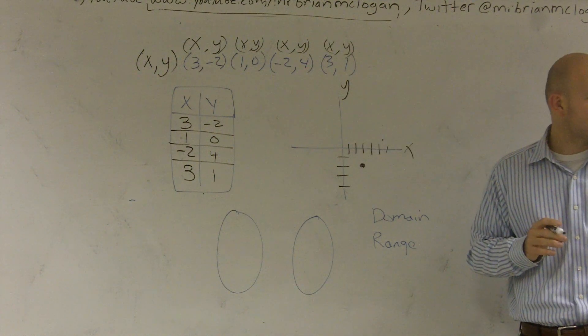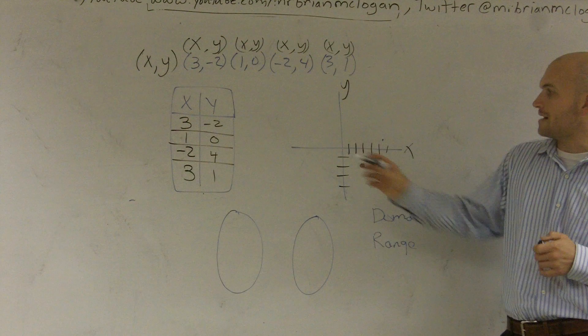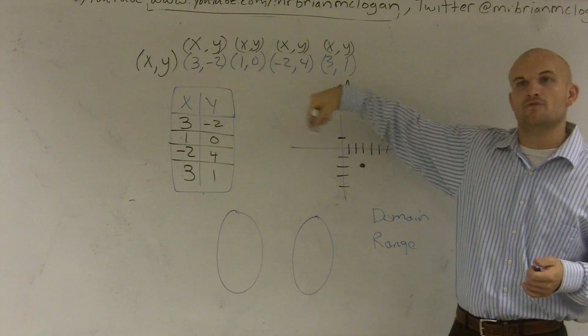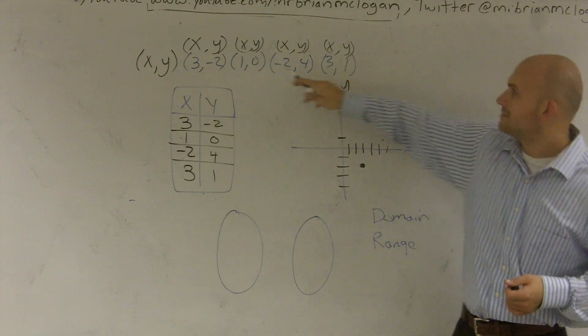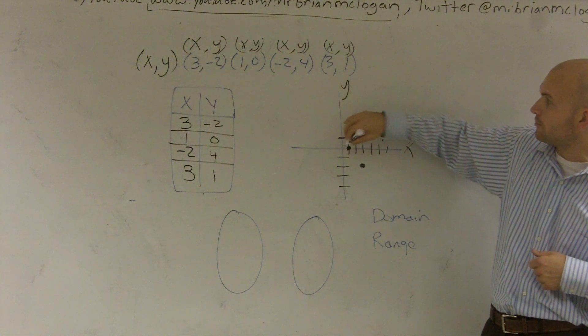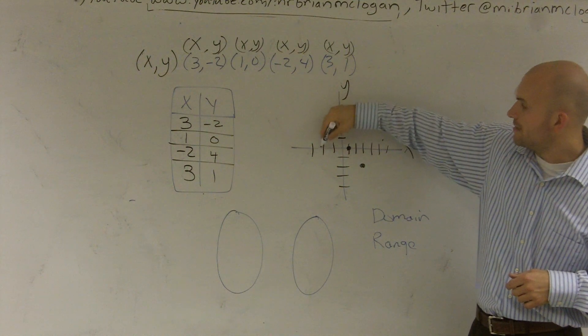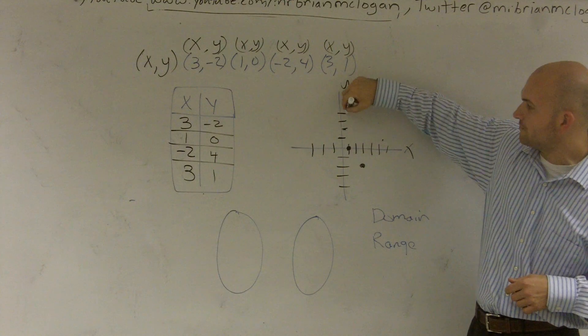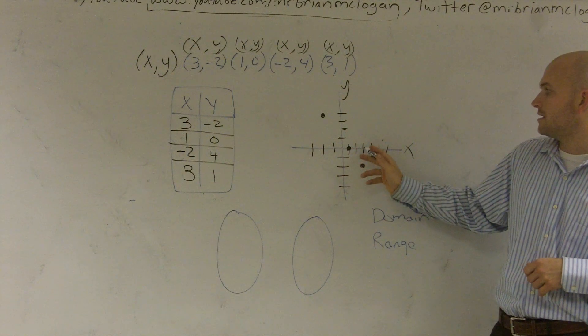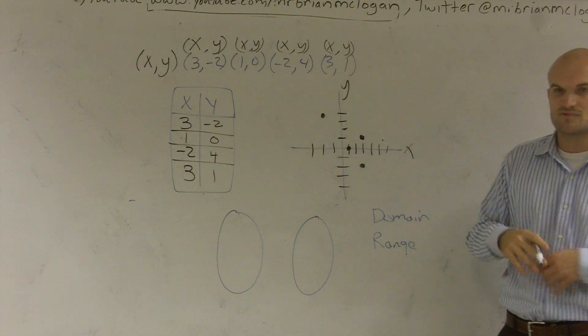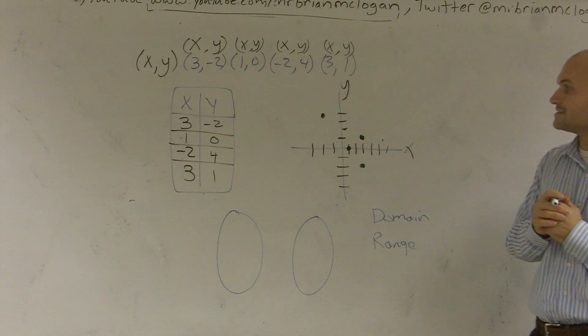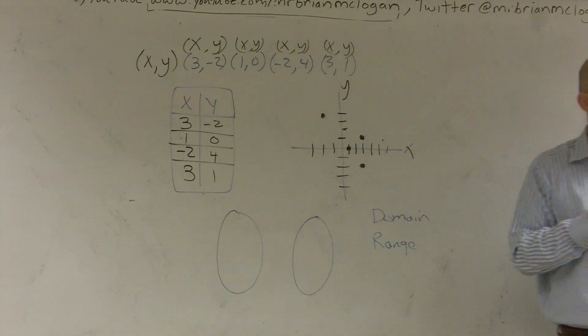The next one, if I want to graph 1 comma 0, X tells me to go over 1, but Y is 0, so I'm not going to go up or down at all. I make a point there. Then I'm going to go over negative 2 and then up 4. And for 3 comma 1, go over 3 and then up 1. You're going to take your ordered pairs and then plot them on the graph.